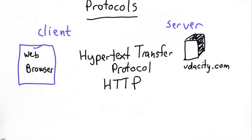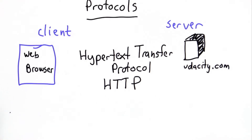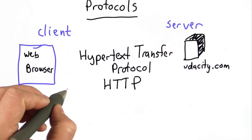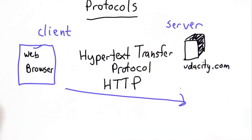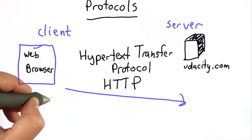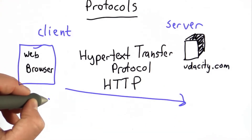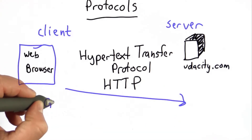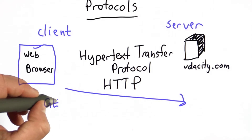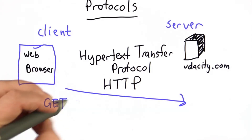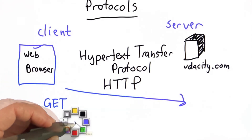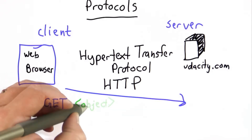It's a very simple protocol. There aren't too many messages — there are actually only two main messages, and there's only one we'll talk about. That's the message called GET. The client can send a message to the server where the message says GET, and then the name of the object that you want to get.